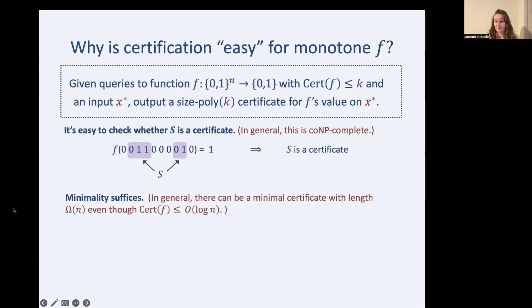Next, minimality suffices. So what do I mean by that? A minimal certificate is one where if you drop any coordinate, it's no longer a certificate. Note that a minimal certificate is not necessarily a minimum certificate. There could be a very short certificate that involves entirely different coordinates. You can think of minimal certificates as local optimum, whereas the minimum is the global optimum. In general, there can be a minimal certificate with length that's practically n, even though the certificate complexity is order log n. So in general, you can have really long, minimal certificates and still be nowhere close to what's optimum.